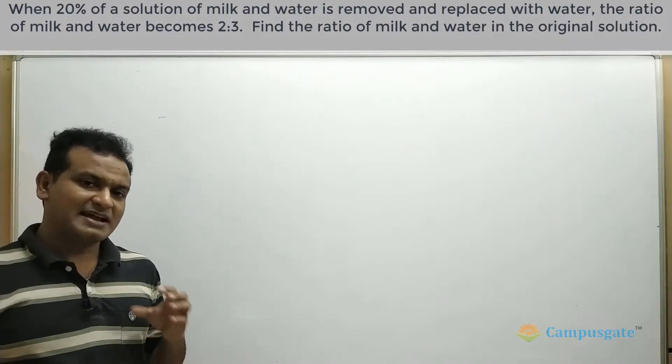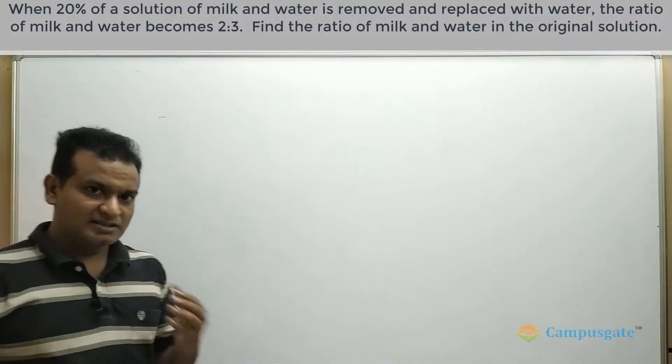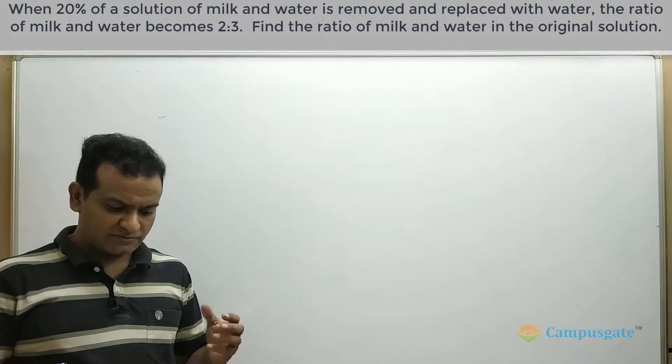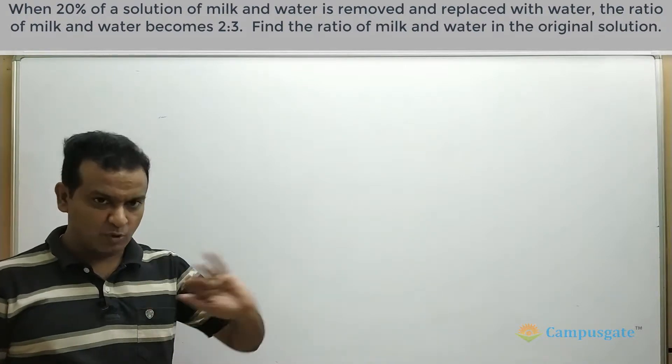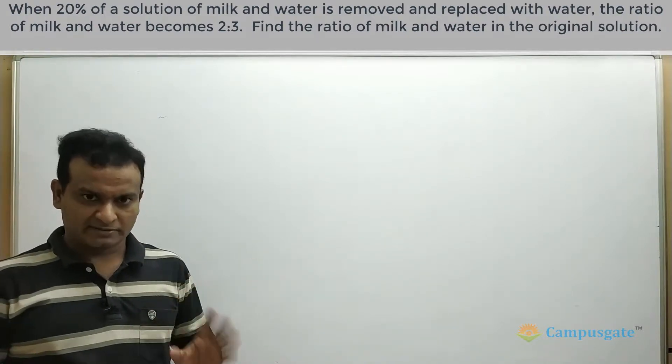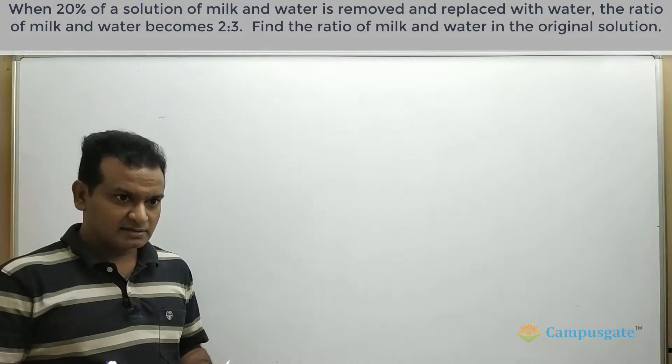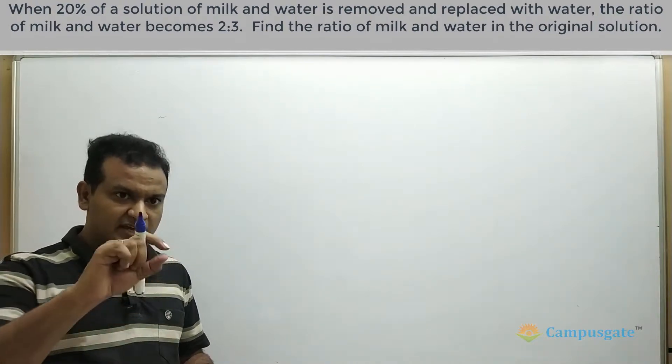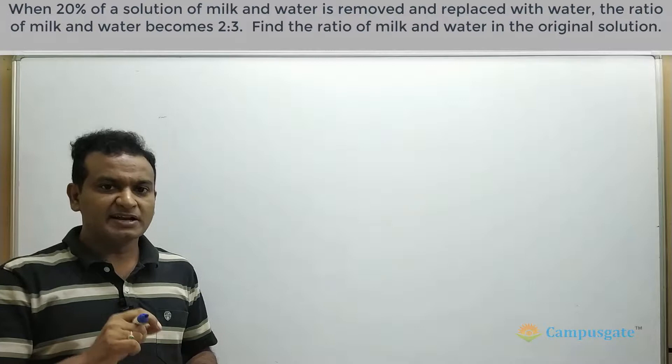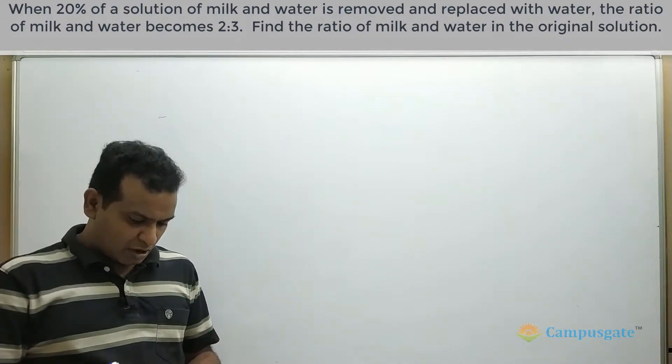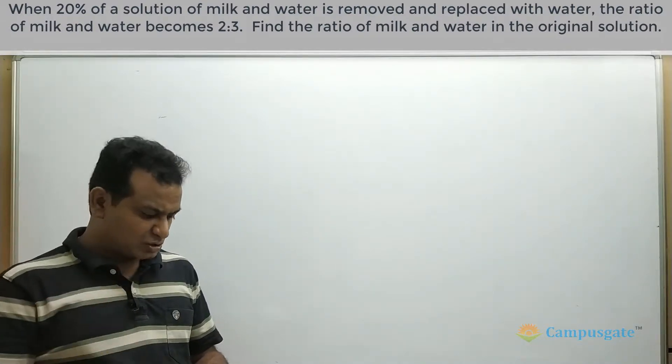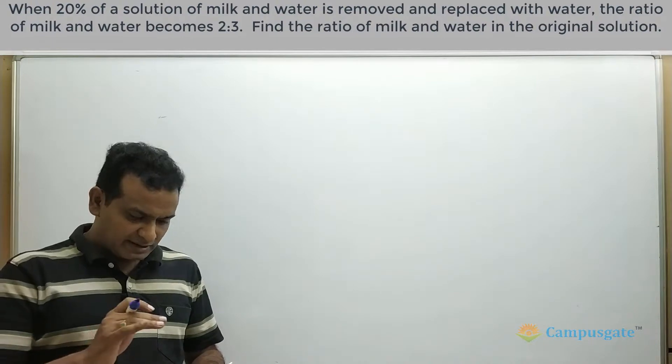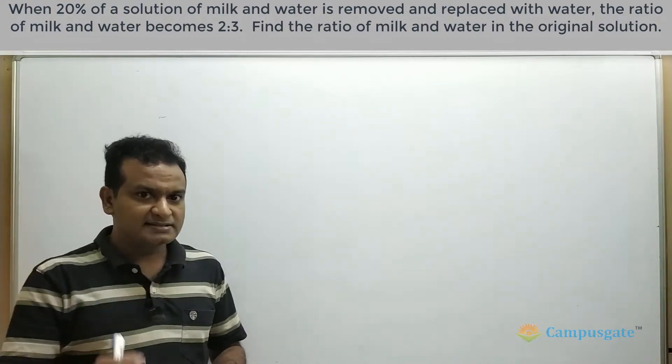Hi, this is slightly a different question. In this question, 20% of the solution of milk and water is removed and replaced with water. The only thing here is instead of giving in the liters, it is given in percentages. Now the ratio of the milk and water becomes 2 is to 3. So let us understand how to tackle these kind of questions.